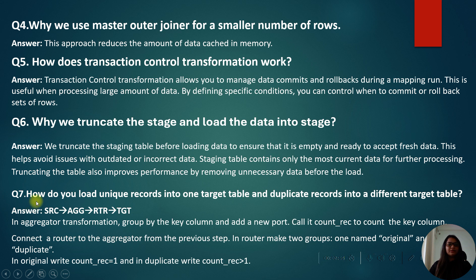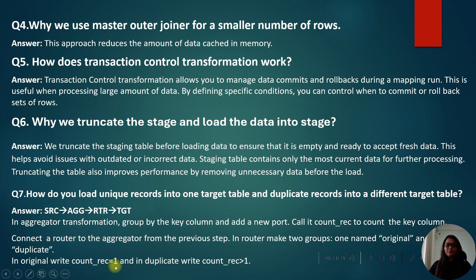How do you load unique records into one target table and duplicate records into a different target table? The mapping flow is: Source → Aggregator → Router → Target. In the Aggregator transformation, we group by the key column and add a new count column — for example, count_record — to count occurrences. In the Router transformation, we create two groups: original (count_record = 1) and duplicate (count_record > 1).